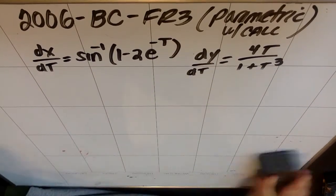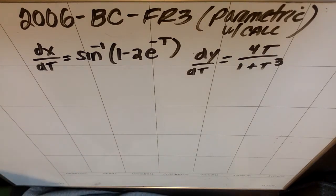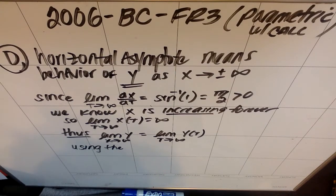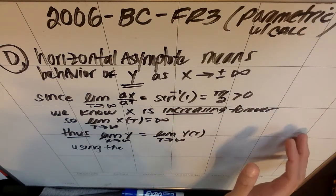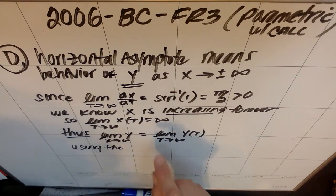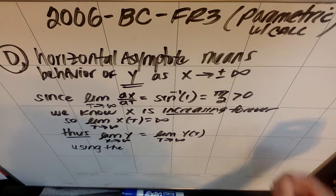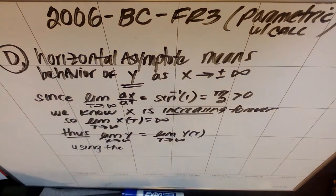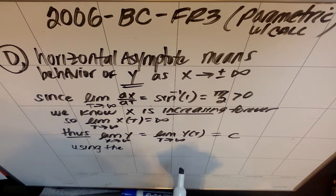Last bit, part D. The graph of the curve has a horizontal asymptote y equals c. Do not evaluate an expression involving an improper integral that represents the value of c. I did something dumb at the end of 2006 free response 3, and there was no good way to fix it without just stopping and redoing part D. A horizontal asymptote means the behavior of y as x approaches plus or minus infinity. But in this problem, since the limit as t approaches infinity of our dx/dt is an inverse sine of 1, which we saw in part C, which is pi over 2 or more importantly bigger than 0, that means that x is increasing forever. So as t goes to infinity, x must also go to infinity. That means that our horizontal asymptote c should be the limit as t approaches infinity of y(t).